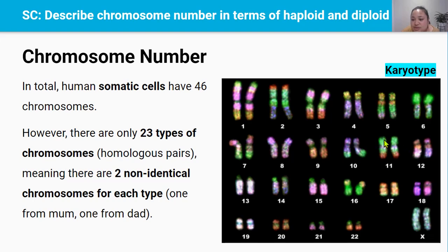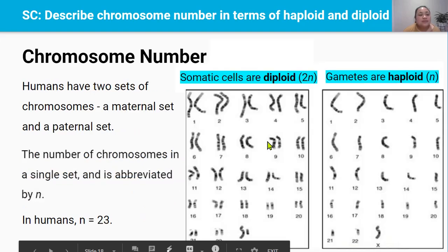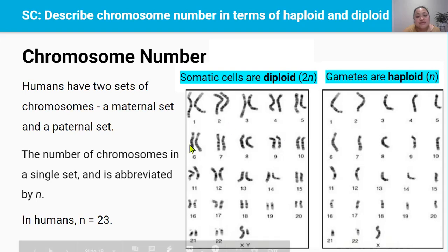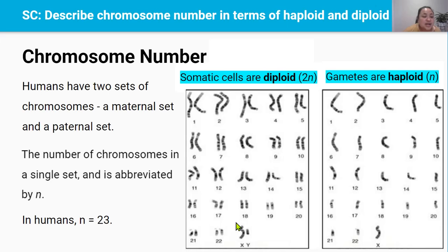Even if chromosomes contain the same genes — say chromosome 11 has the eye colour gene — those genes may be different versions. For example, the chromosome from mum may have the blonde hair version, whereas the chromosome from dad may have the brown hair version. We inherit one chromosome from each of the 23 types from each parent. So the 46 chromosomes in our somatic cells are actually two sets of 23 chromosomes: a maternal set and a paternal set.